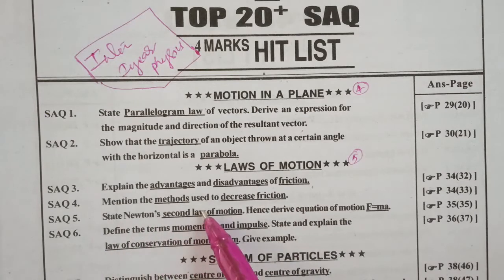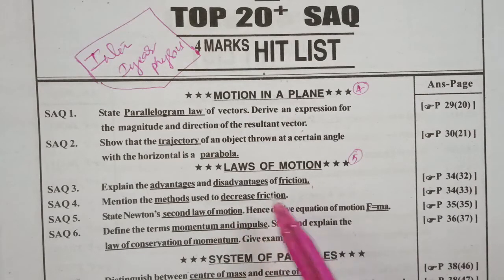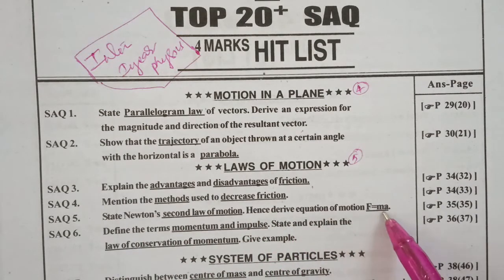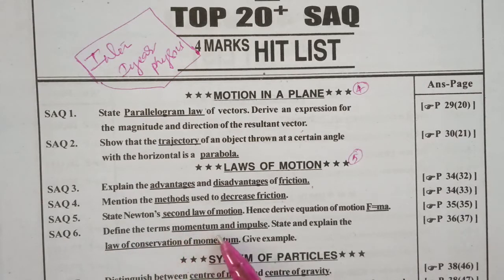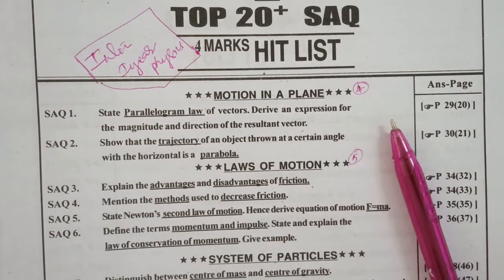Mention the methods used to decrease or reduce the friction. Next question: state Newton's second law of motion and derive the equation of motion F equals MA. Define the terms momentum and impulse, state and explain the law of conservation of momentum with example.